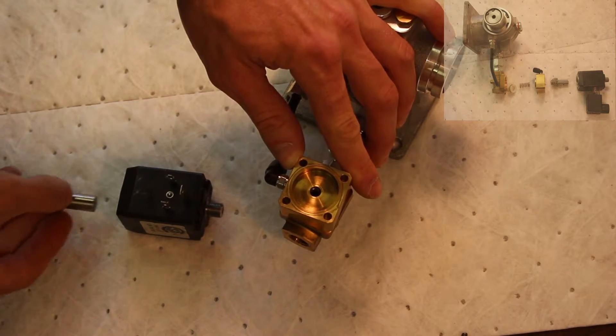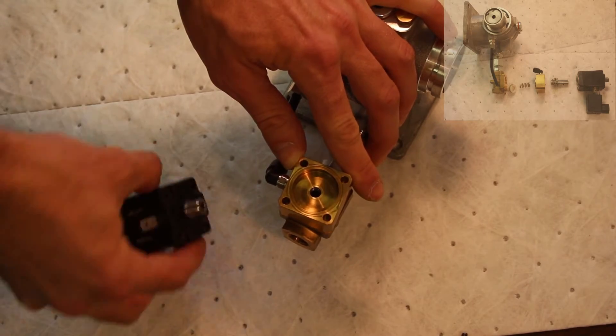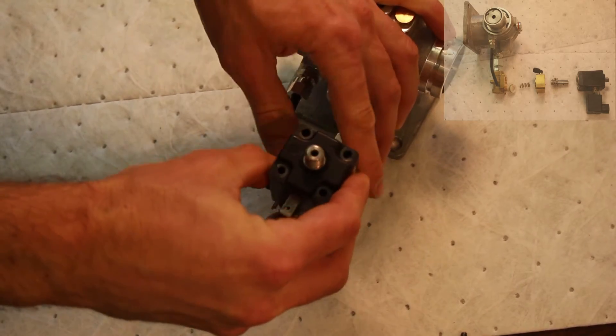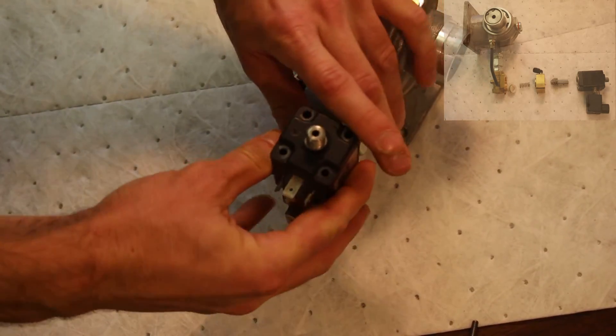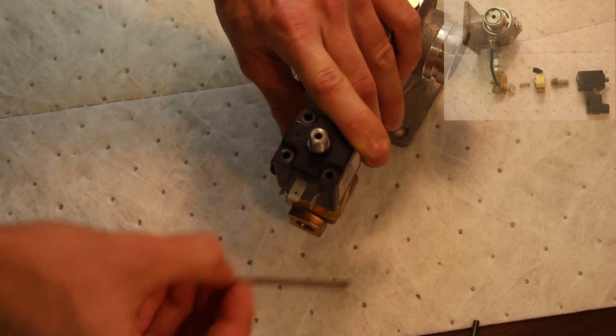Slide the solenoid anchor back into the solenoid valve body and place the valve back on top of the brass assembly. Hold light pressure on the valve to keep the parts from shifting.